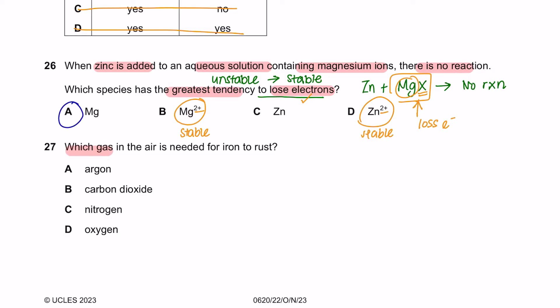Question 27. Which gas in the air is needed for iron to rust? This question is pretty direct. The answer will be oxygen. For rust to take place, there must be presence of water and oxygen.